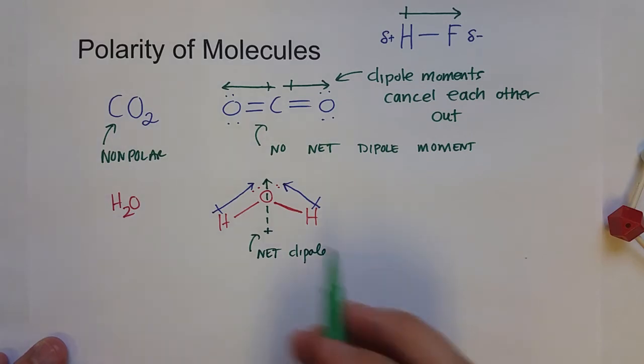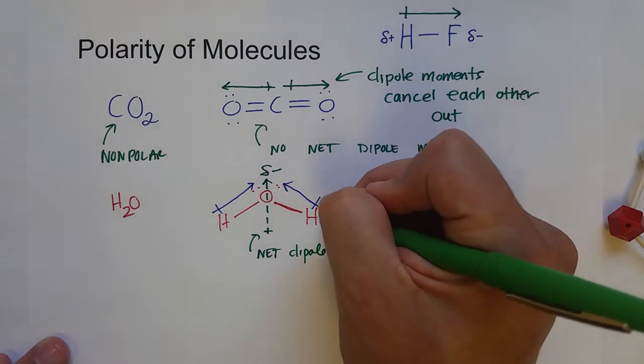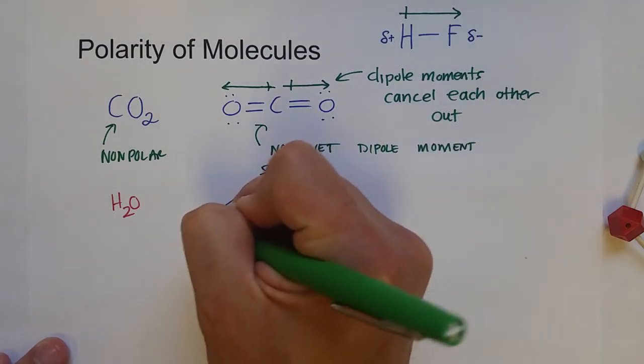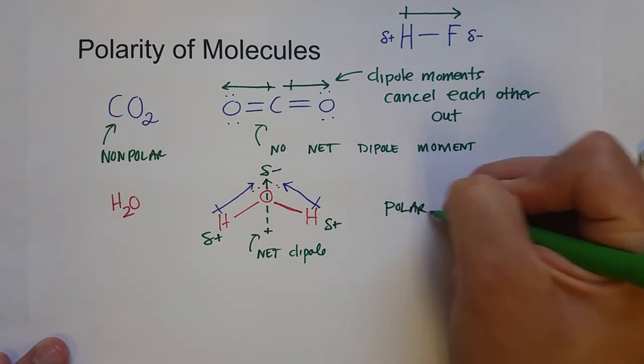If water was a linear molecule, they would cancel each other out. So there's a partial negative charge by the oxygen and partial positive charges by the hydrogen. So water is a polar molecule.